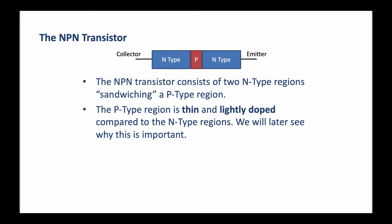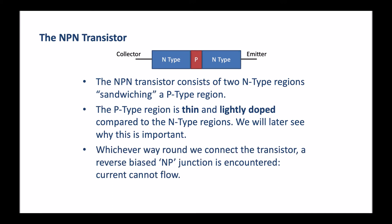Whichever way around we connect the transistor, a reverse biased NP junction is encountered, so current can't flow. We saw in the previous video on diodes that when the diode is connected in reverse bias, current can't flow because of the depletion region. Likewise, in this transistor the same is true. Whichever way the current is flowing, either into the collector and out of the emitter or into the emitter and out of the collector, it's going to encounter a reverse biased NP junction which prevents the current from flowing. A third connection is required, which is of course the base.